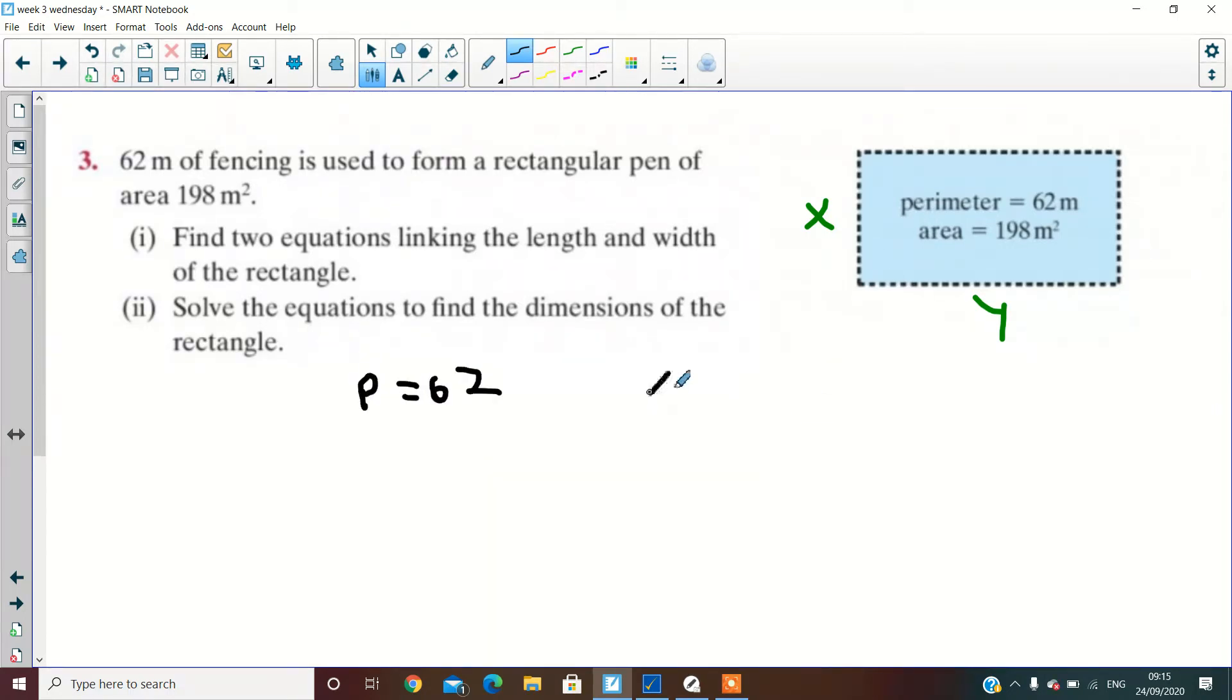So that means x plus y plus x plus y, because remember you have to do the full outer perimeter here, and that equals 62. You should get 2x plus 2y equals 62, which is x plus y equals 31. Is that clear with you guys?